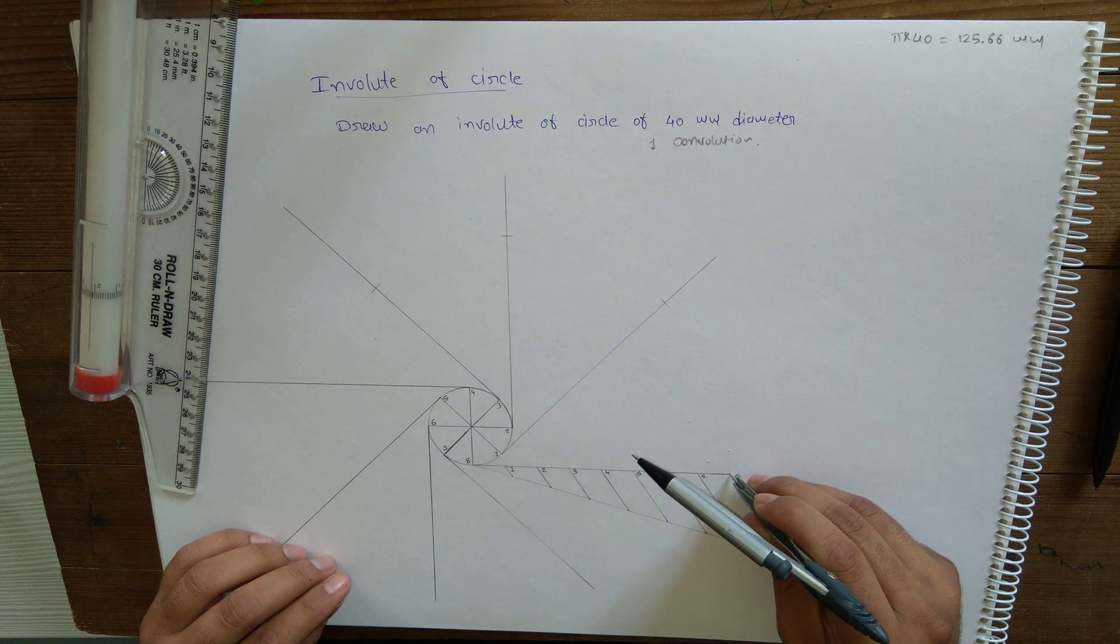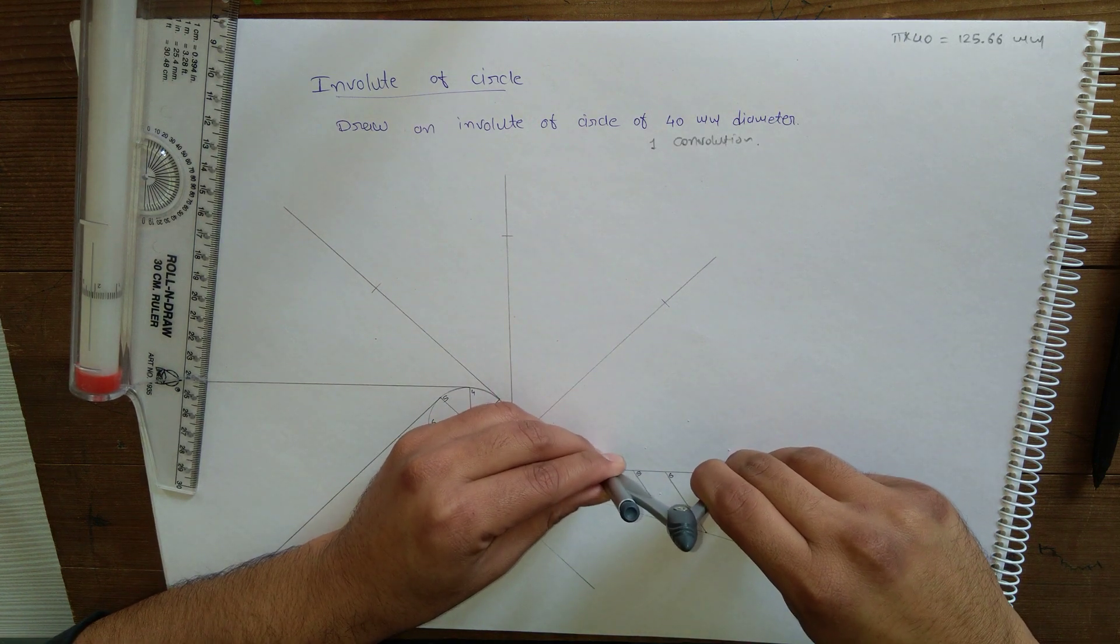And then at last connect all these points to get involute of circle.